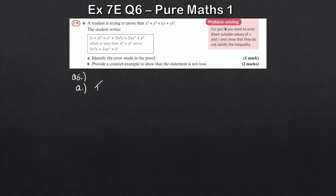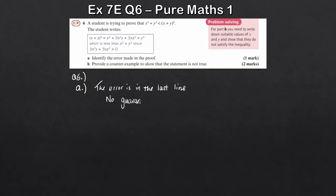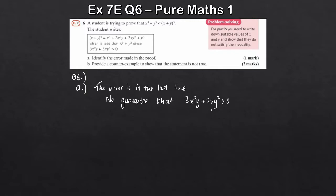There's a bit of an issue with this statement. The error lies in the last line — we don't necessarily know whether 3x²y plus 3xy² is actually greater than 0. There's been no proof of that fact, so there's no guarantee. Obviously this would depend on the value of y, for example. 3x² will always be positive, but if y is negative, that term would be negative, and depending on the values, the whole expression might actually be negative.